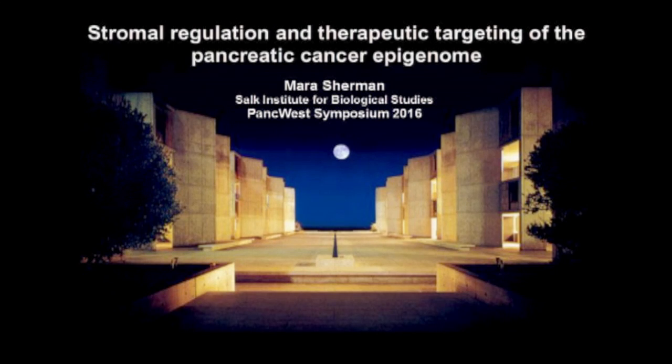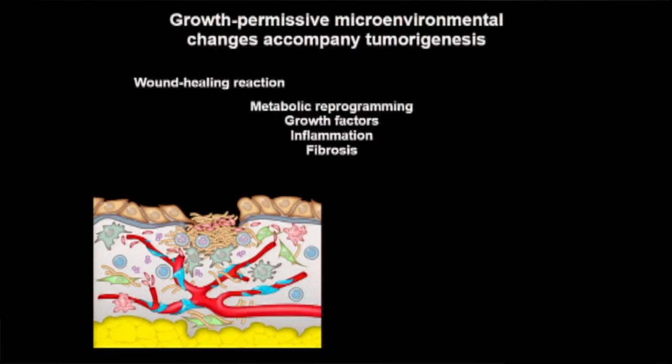It's increasingly evident in various solid tumor types that growth-permissive microenvironmental changes accompany solid tumor progression in a way that reflects the disruption of normal tissue homeostasis during wounding. In a wounding response, epithelial cells respond to secreted factors produced by professional wound healing cells like fibroblasts. This includes soluble factors like cytokines and growth factors, and insoluble factors like extracellular matrix components. Epithelial cells respond to these signals and in turn change their microenvironment, and this reciprocal crosstalk promotes tissue regeneration and healing.